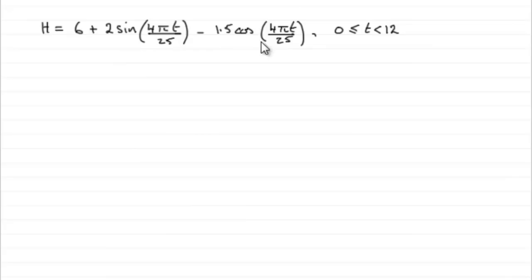So, we can rewrite this then, based on that idea, that therefore h equals 6 plus this expression, which was r, r being 2.5, sine of theta, but now theta is the 4 pi t over 25, then it was minus alpha, and we discovered that alpha before then was 0.64350 and so on. So I would use that unrounded angle there.